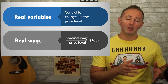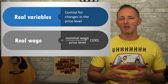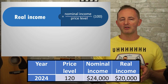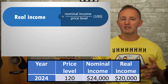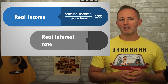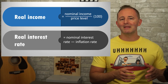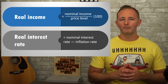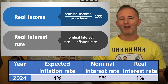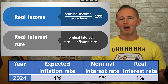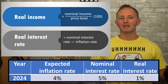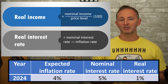Similarly, real income equals nominal income divided by the price level times 100. So if the price level was $120 and your nominal income was $24,000, your real income was $20,000. Now, real interest rates are a little bit different. The real interest rate equals the nominal interest rate minus the expected inflation rate. We'll learn about this again in Unit 4, but for now, if we have an expected inflation rate of 4% and the nominal interest rate is 5%, then 5 minus 4 equals a real interest rate of 1%.